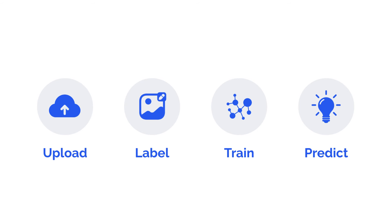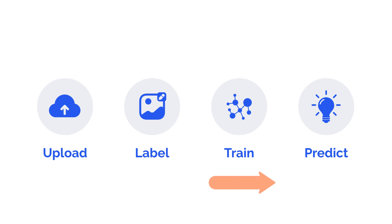The four main steps of a computer vision project are to upload your images, to label your images, to train a model, and then to make predictions.